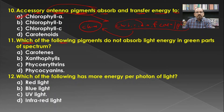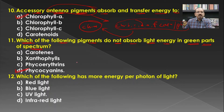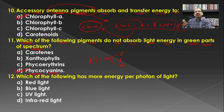Which of the following pigments does not absorb light energy in the green part of the spectrum? The phycobilins are categorized into three different classes: phycoerythrin, phycocyanin, and allophycocyanin. Out of these, phycocyanin is not responsible for absorption of the green part of the spectrum. Hence phycocyanin is the correct answer.